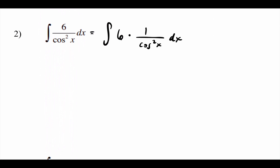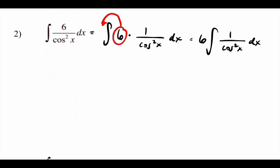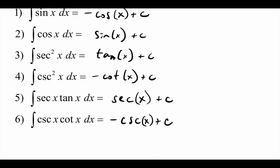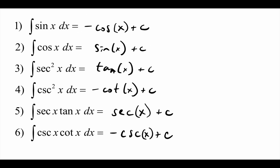Now I can move the six to the front. Then for one over cosine squared — looking at our trig list, I have secant squared (number three) and cosecant squared (number four). Is either related to one over cosine squared? Yes — secant is one over cosine, so one over cosine squared is just secant squared.